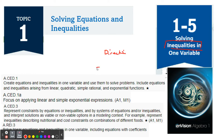And again, on a number line, greater than means this way, less than means this way. That's a zero in the middle because usually you put the negative numbers over here, the positive numbers over here, zero in the middle.